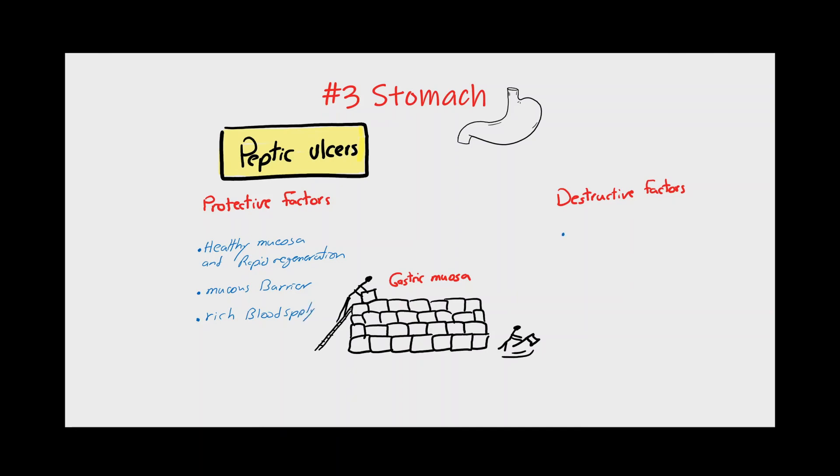On the other hand, the destructive factors are the gastric juice itself containing HCL and protein digestive enzymes like pepsinogen, infections such as Helicobacter pylori, and mechanical friction against swallowed foreign bodies. Any increase in the destructive factors or decrease in the protective factors distorts the balance between them and leads to the appearance of peptic ulcers.